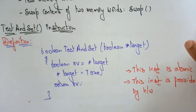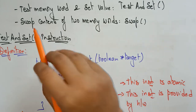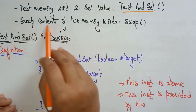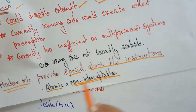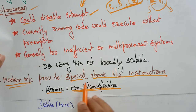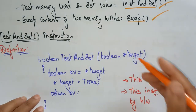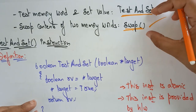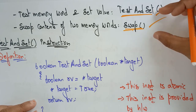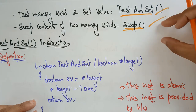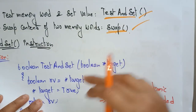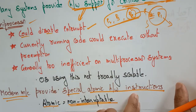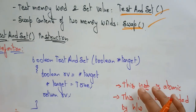Modern machines do some codings like test memory word and set value — that is test and set — and swap content of two memory words — that is swap. With the help of these functions, modern machines provide special atomic hardware instructions. So the two atomic hardware instructions that provide hardware support for the critical section code are test and set, and swap.